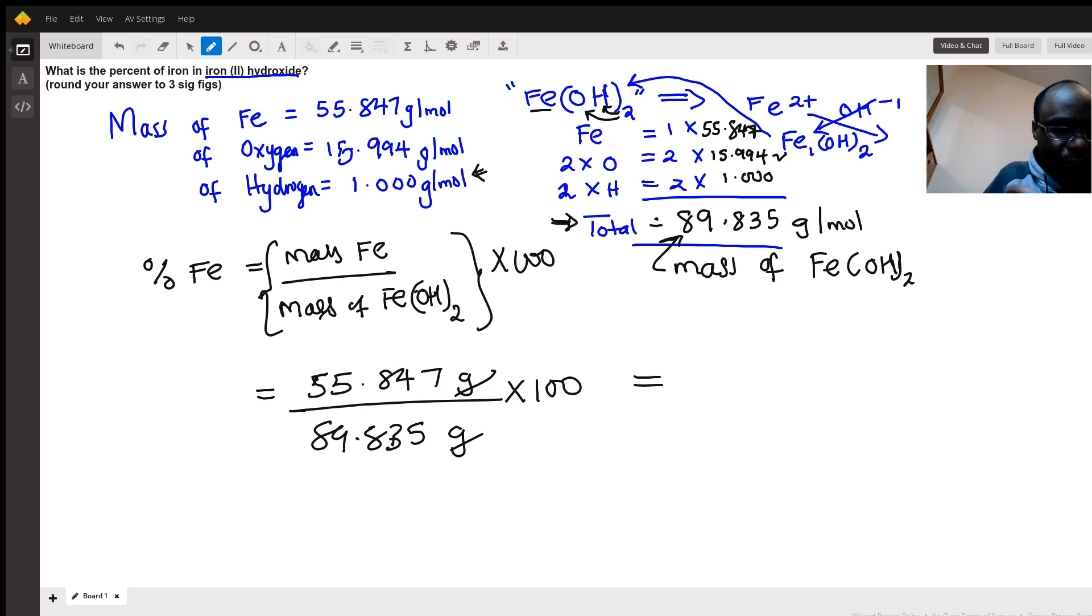So we're going to say 55.847 divided by 89.835, and we multiply by 100. I'm getting my answer to be 62.166 percent. The question asks for three significant figures, so roughly there, I'm gonna say 62.2 percent.